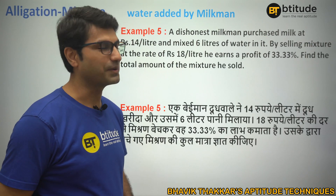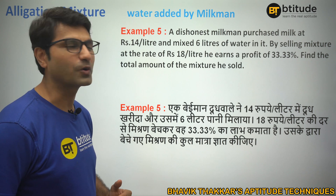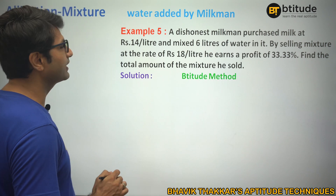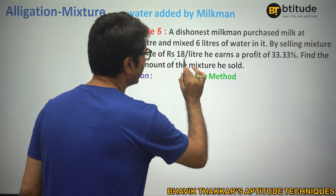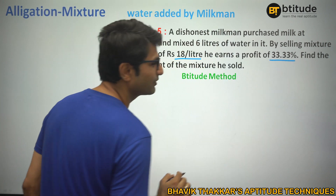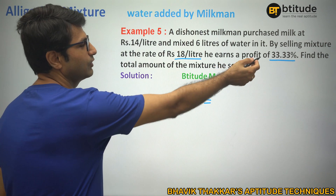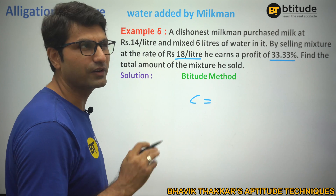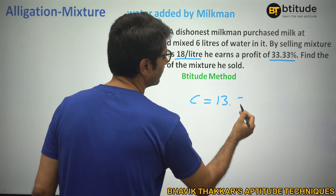Last question — pause the video and try on your own first. Selling price is 18 rupees and profit is one-third. If profit is 1/3, then cost is 3, profit is 1, selling price is 4 — so profit from selling price is one-fourth. One-fourth of 18 is 4.5 rupees profit, making cost 13.5 rupees.